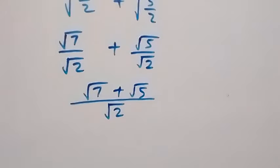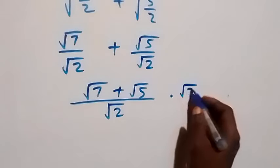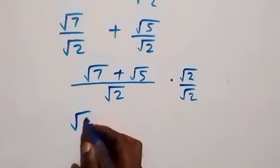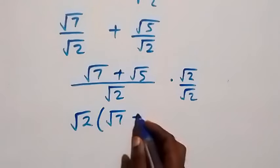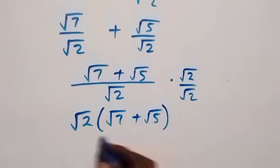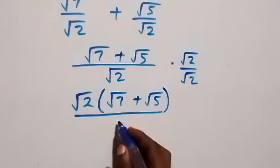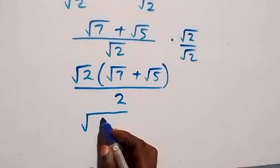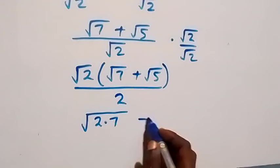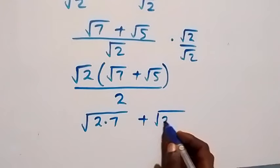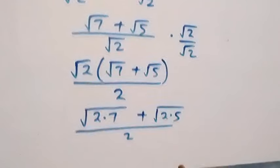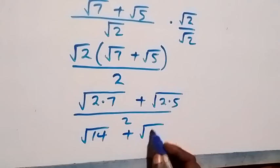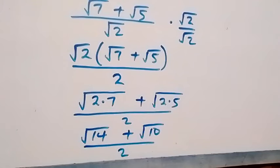From here we can rationalize this and multiply by root 2, then also divide by root 2. Root 2 multiplies to give root 2 into bracket root 7 plus root 5, then over root 2 times root 2, which gives us 2. Then opening the bracket, we have root 2 times root 7, plus root 2 times root 5, over 2, which becomes root 14 plus root 10, over 2.